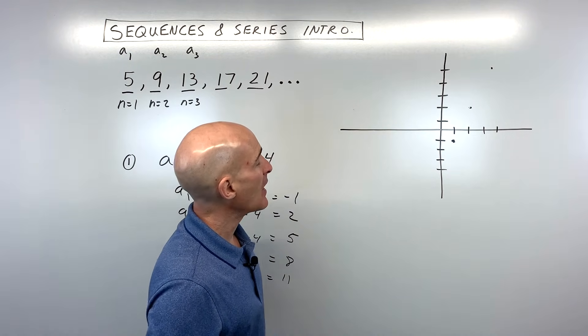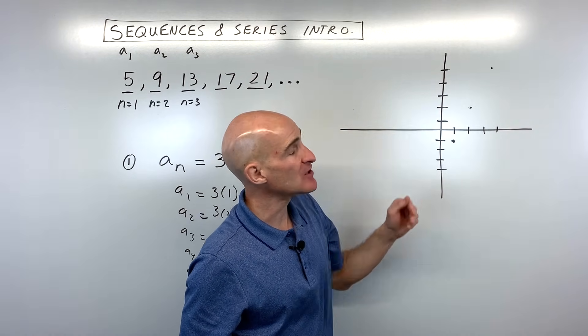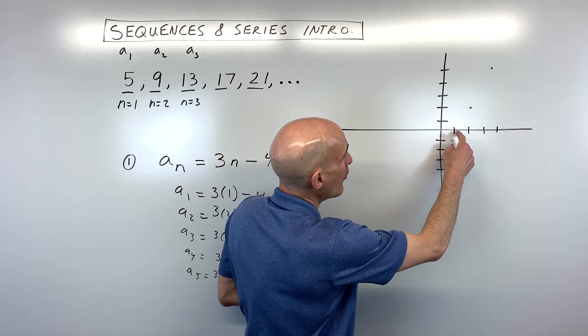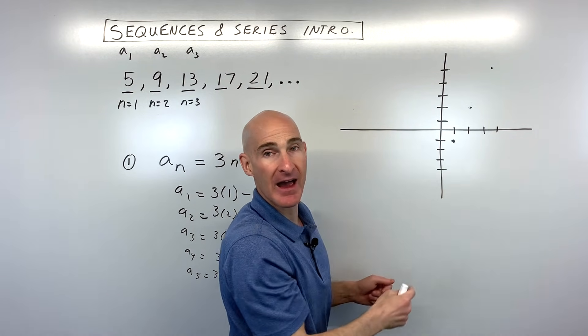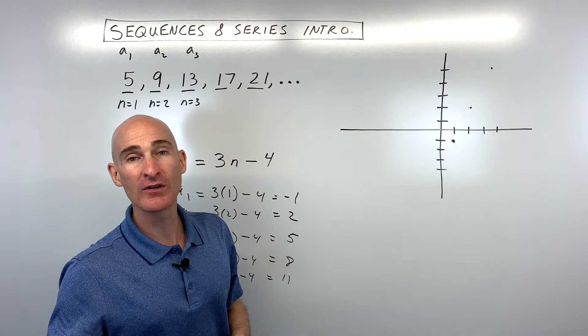But that's the key. This is graphing a sequence. And we don't want to draw a line through these points. This is actually like a discrete, meaning these are separate. There's not like a 1.5 term or 1.75 term. It's just integer values like term 1, 2, 3, 4, etc.